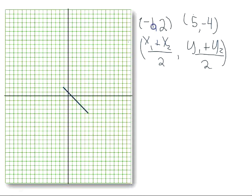So I want to add the x-coordinates. The first x-coordinate is negative 1, the second x-coordinate is 5, so I'll have negative 1 plus 5 over 2, which gives me 4 over 2, which is 2. So my midpoint has an x-coordinate of 2.